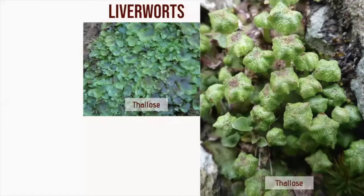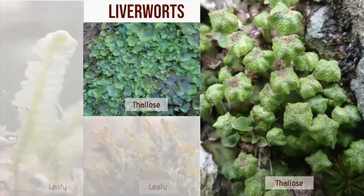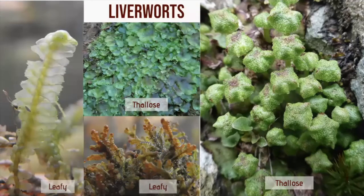If you look at liverworts, they generally lack this thickened midrib. Some have a body known as a thallus where there's no differentiation between stem and leaves, whilst others have a leafy form. They're also less resistant to drying out and so are restricted on the whole to damper places than mosses.